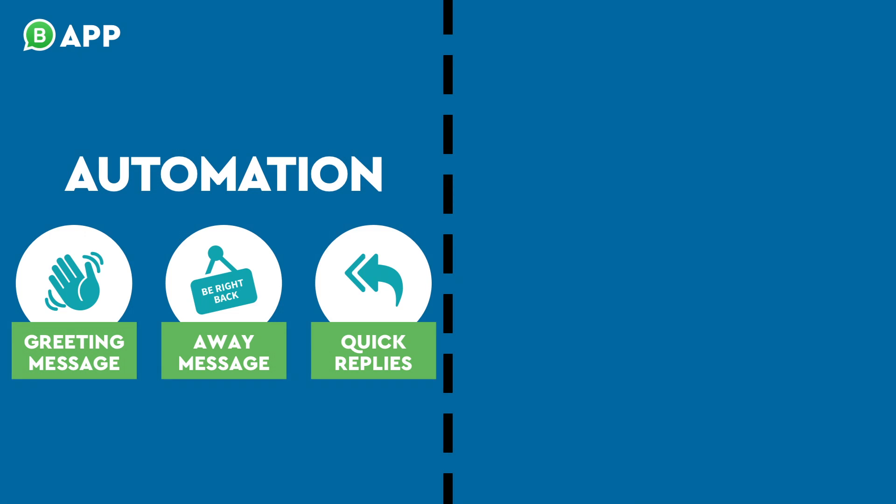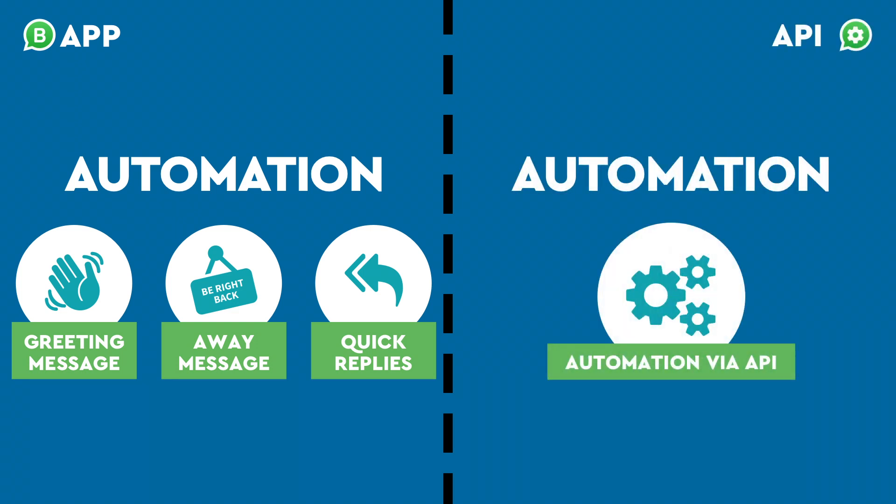Now, replying to all those messages can be tough, so you'll want to know the automation differences between an app and an API account. The app has built-in features to help you automate greeting messages, away messages, and quick replies. For more advanced automations, use WhatsApp API to connect to your business logic.